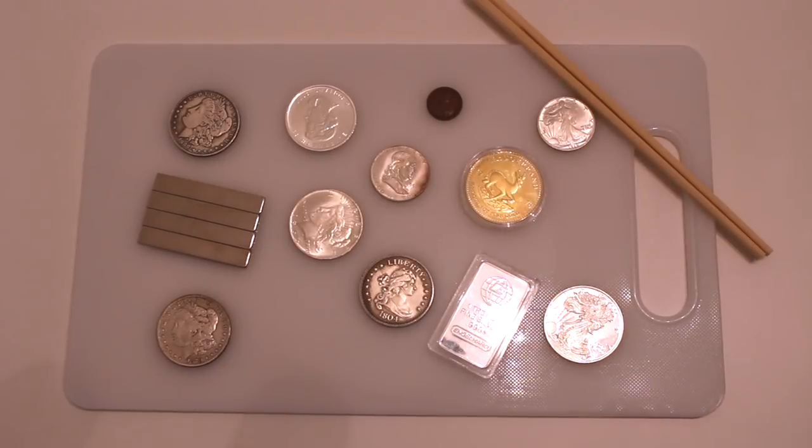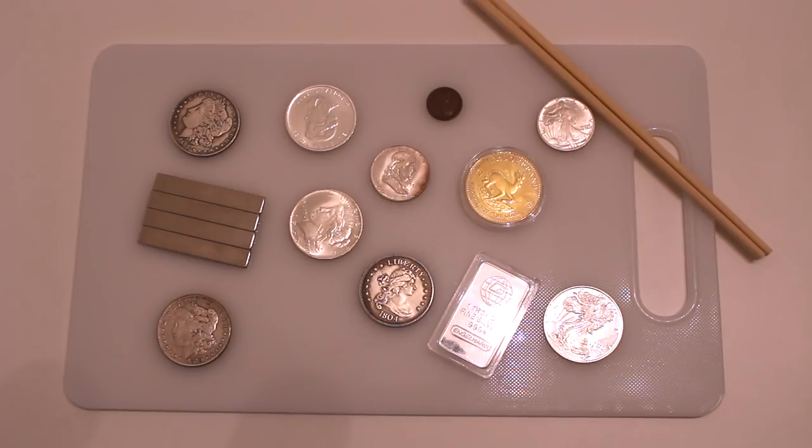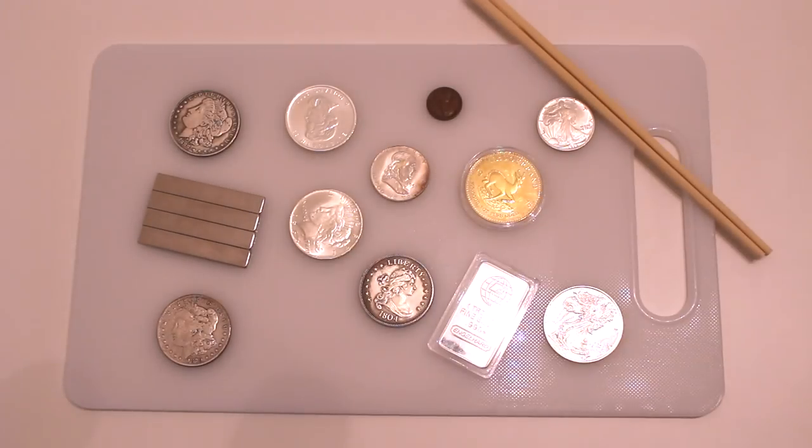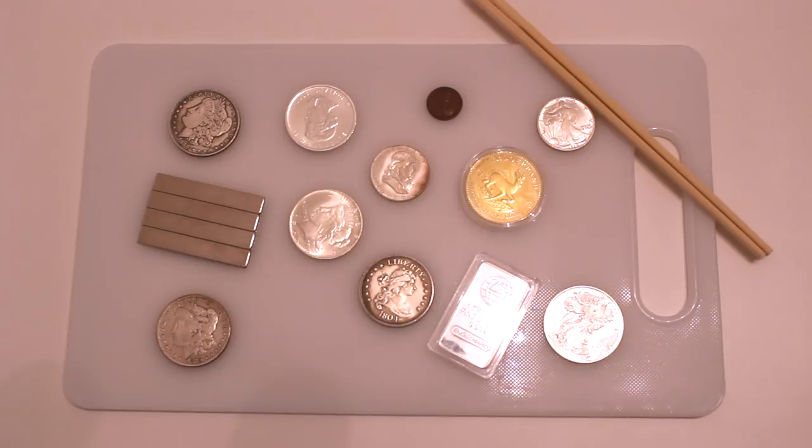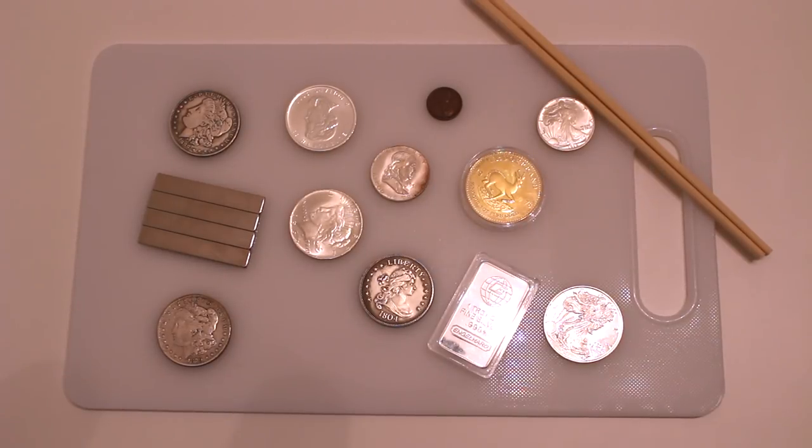All right, so here we are. We have all of the different items that we need to build our apparatus that is going to help us determine whether or not these coins we see here are real gold or silver. Now, what we're going to be doing, if you guys haven't already guessed, is we're going to be building a magnetic slide.